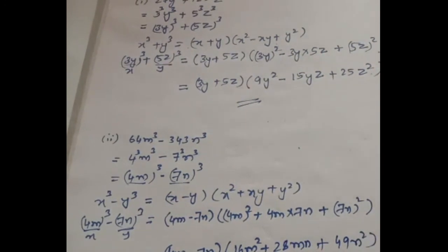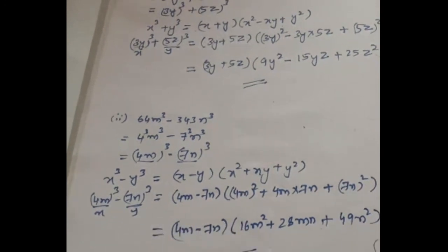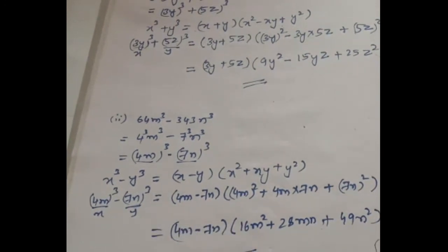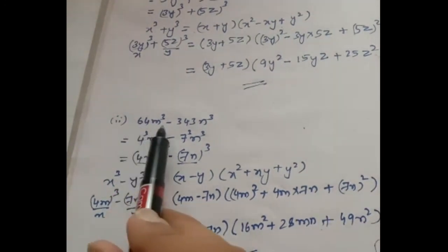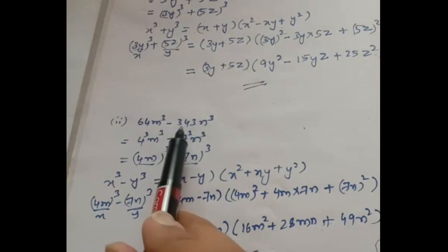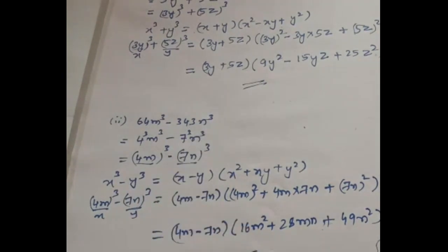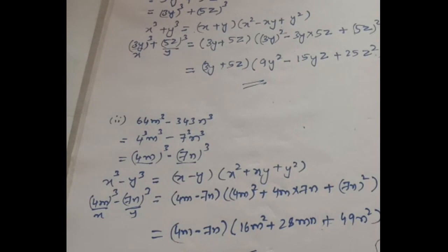These are the two factors for 64m cube minus 343n cube. I hope you understood. If you have any doubt, you can write in the comment section. Don't forget to like, share, and subscribe to the channel Mathematics Classes. Thank you for watching.